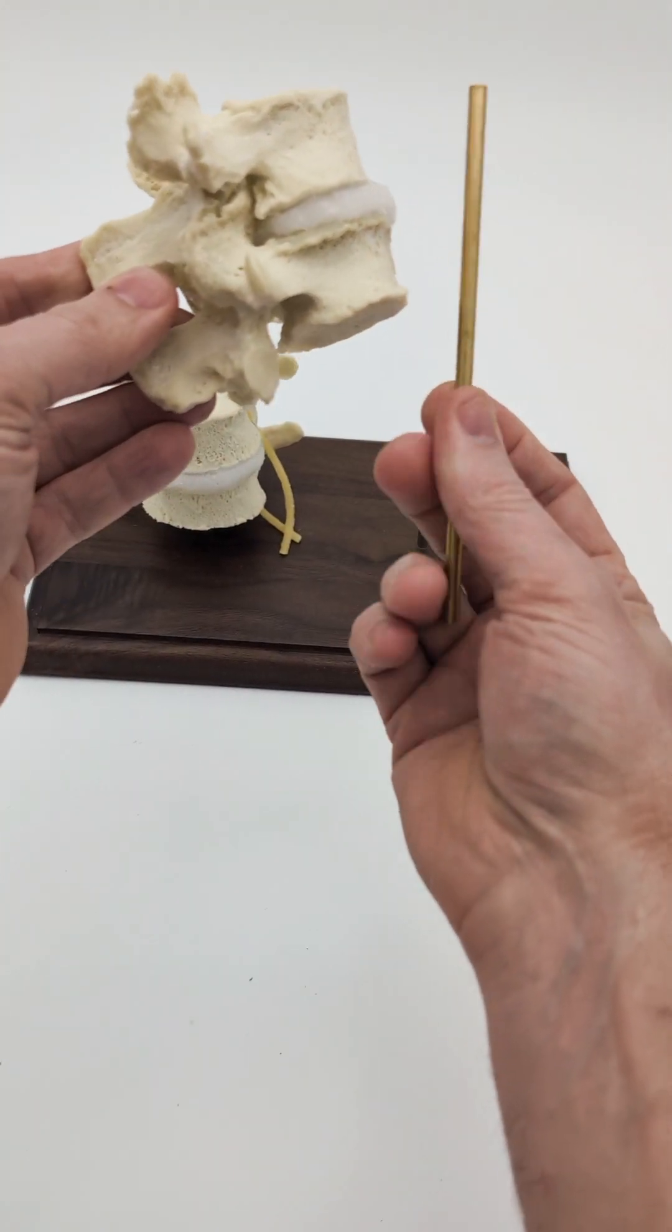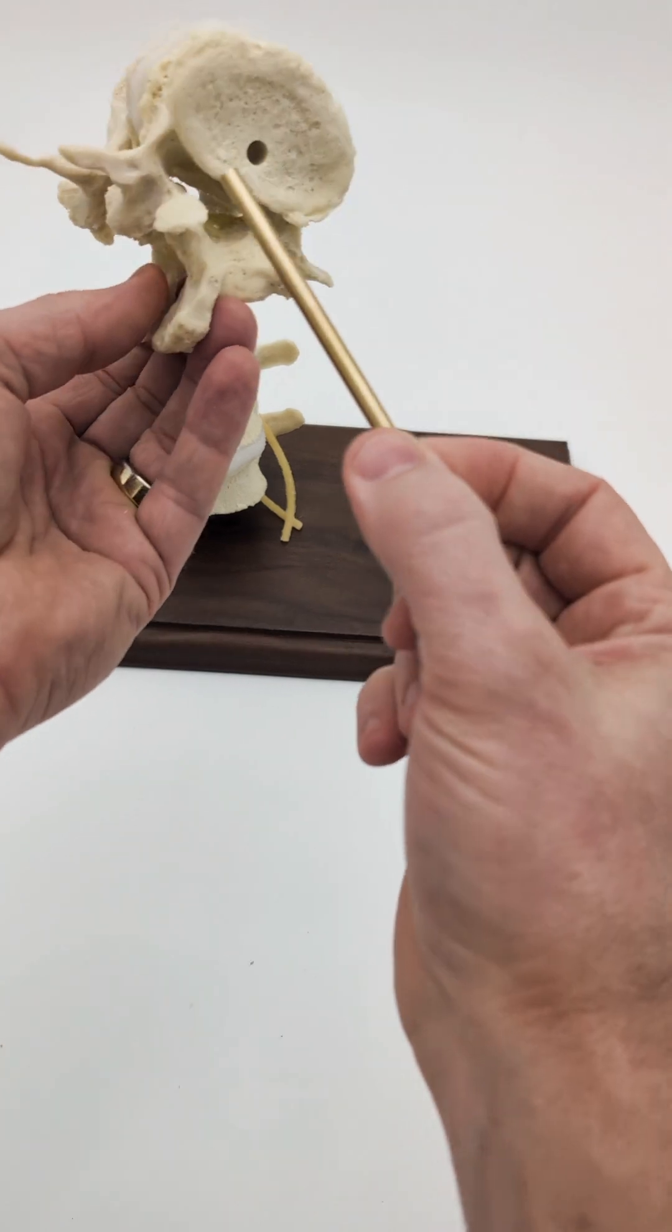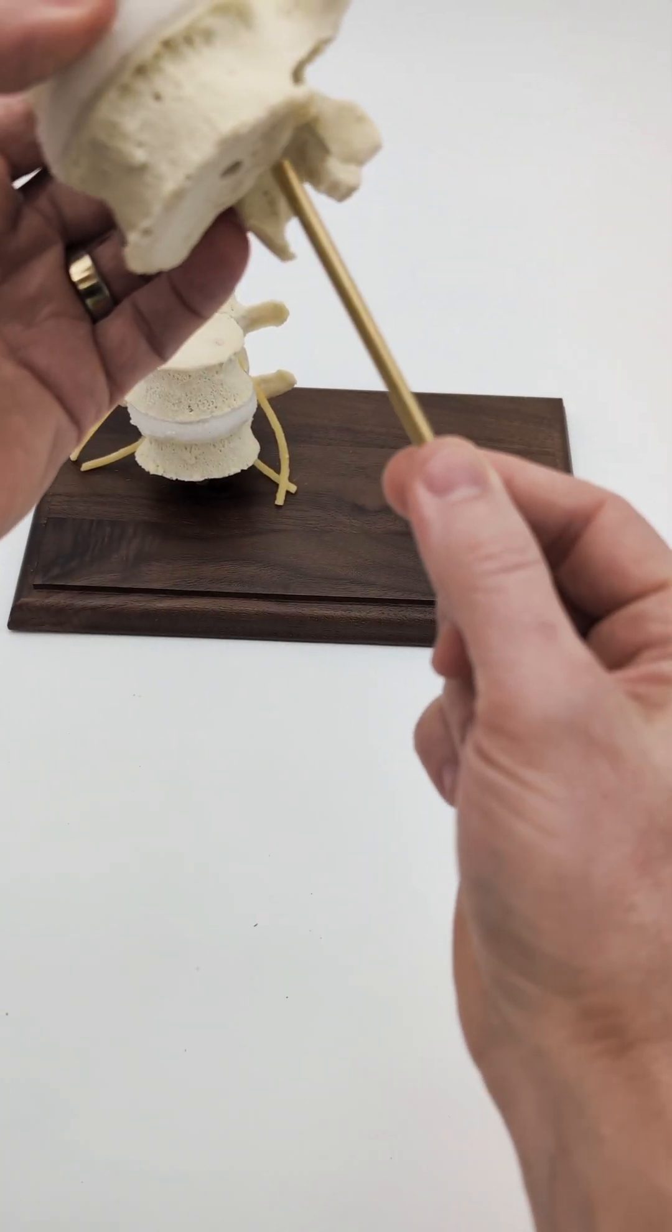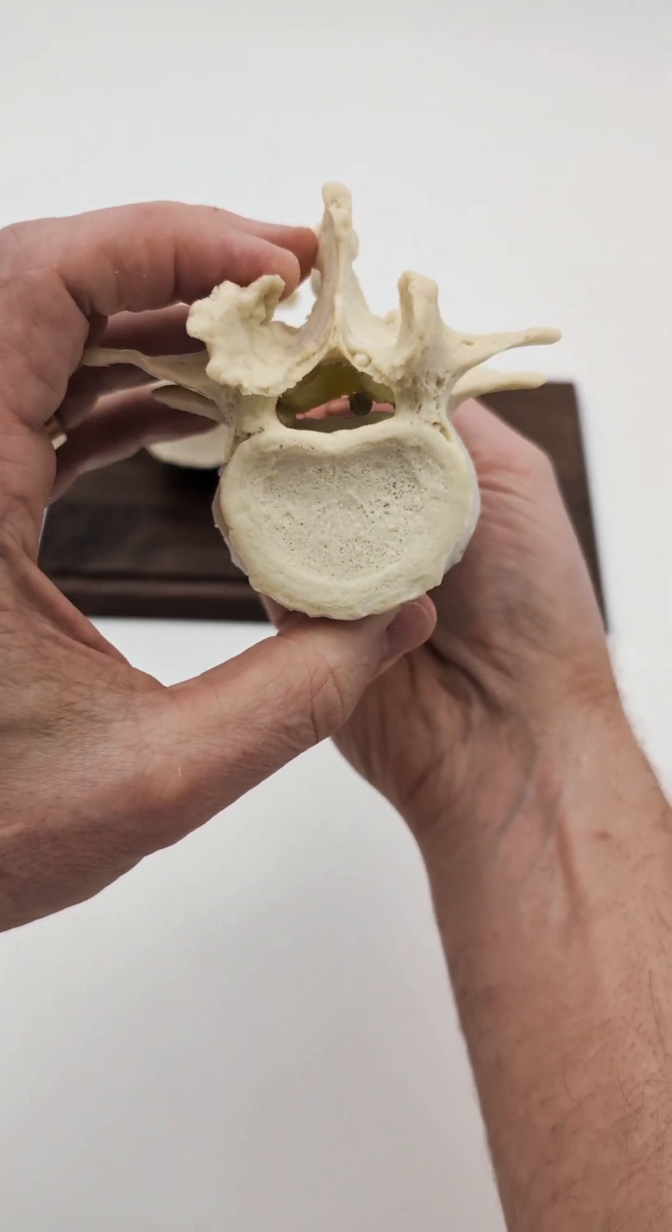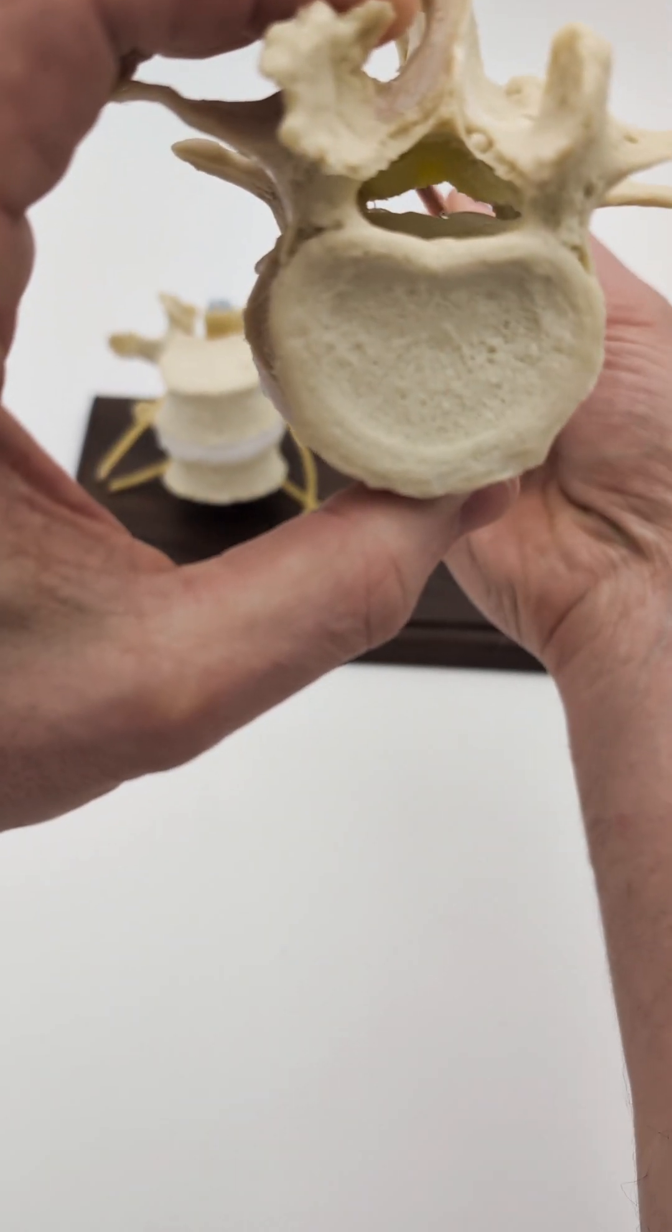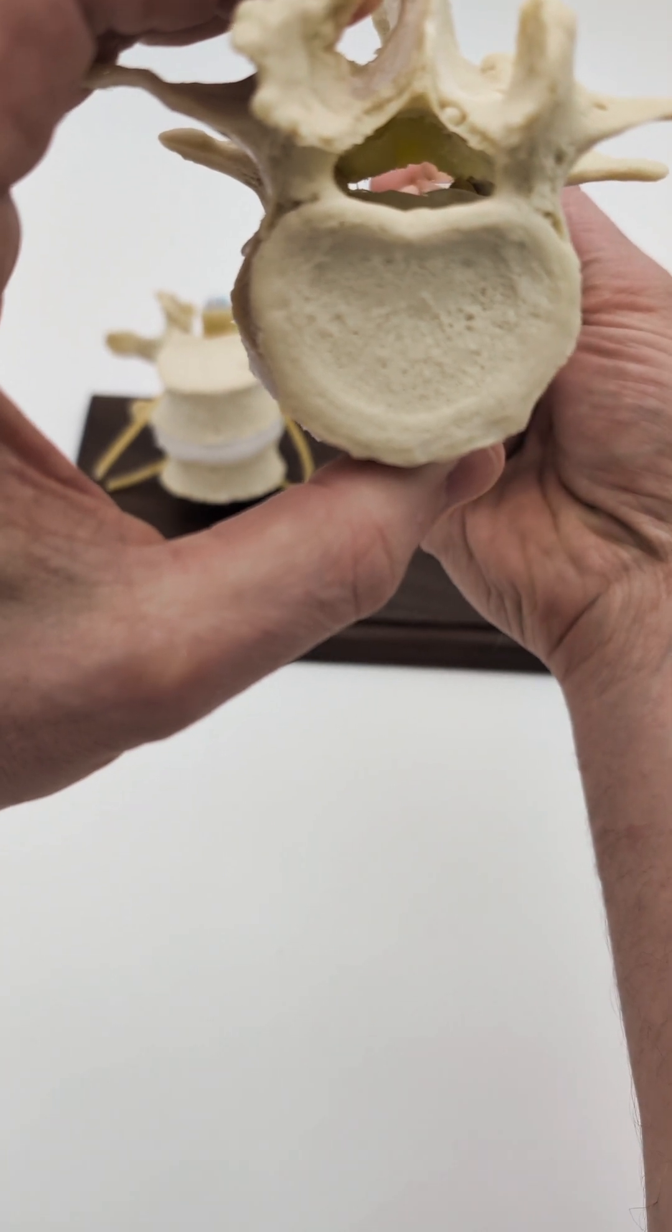You can use an object, a pencil works, but you can see how the spinal canal in this lateral recess here on this side is a little bit more open.